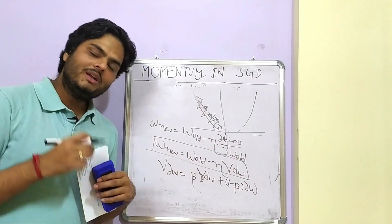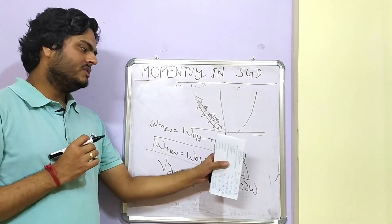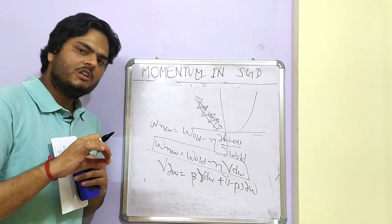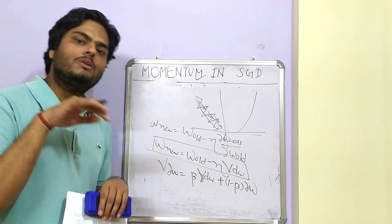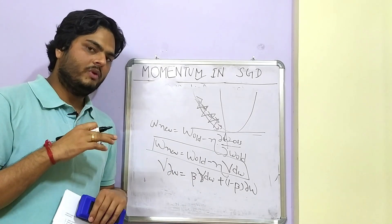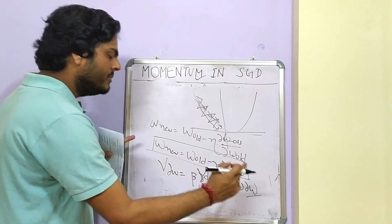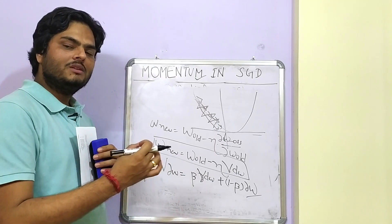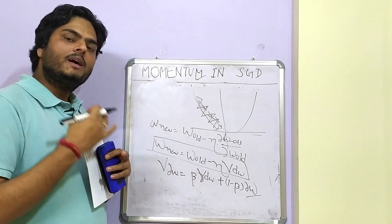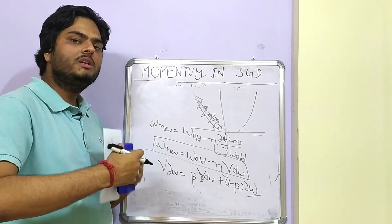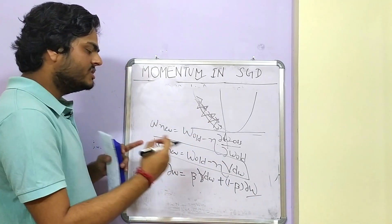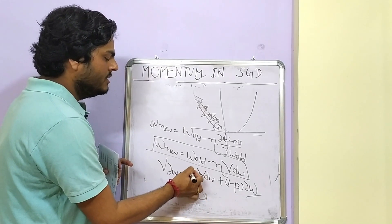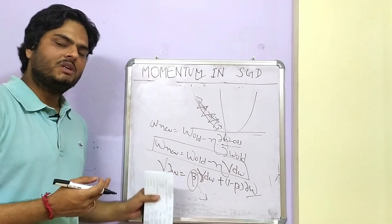V_DW is nothing but beta times V_DW plus 1 minus beta times DW. DW is nothing but derivative of loss with respect to the old weight. So what is happening here is we are optimizing the weight using this function. In this function, we are not directly taking the derivative as we used to take in normal. What we are taking here is a term called V_DW. V_DW stands for with what velocity you want to increase or decrease your weight. Now, this is all these things combined together come and fit into the equation that gives more weight to the recent derivatives and less weight to the derivatives which were for the W_old. Using this, this term is calculated and this beta that you see here is called as the momentum coefficient or you can call as the momentum term of this equation.